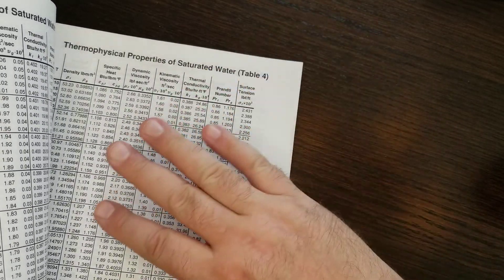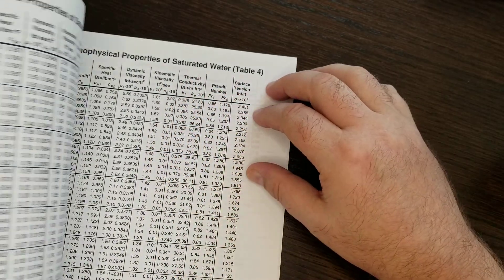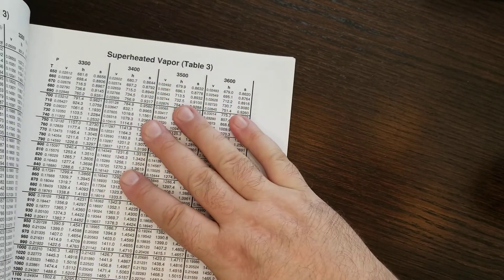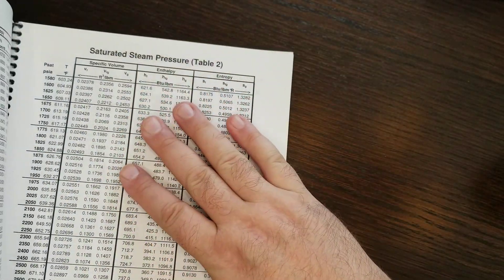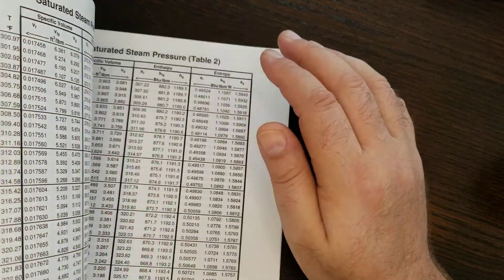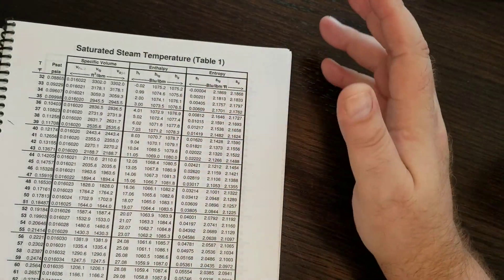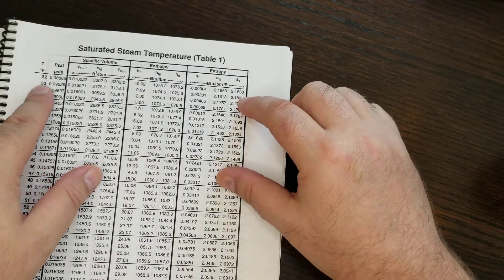There are four tables and you'll see that we didn't really use anything but tables one and two for this course. I didn't get into table four or table three. We didn't really play around with superheated steam at all, but we did do a lot with saturated steam, which is tables one and two. Tables one and two are the same, they're just set up with a different starting point.